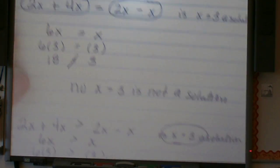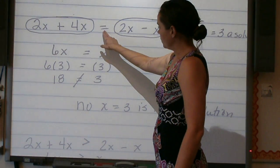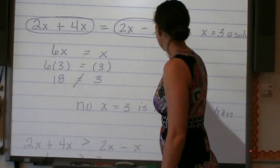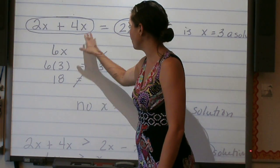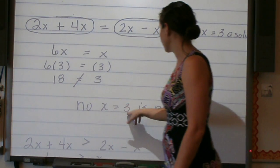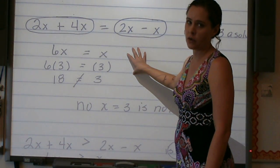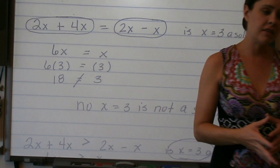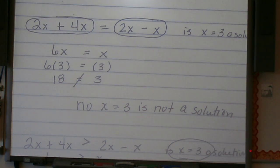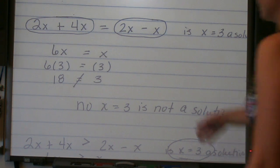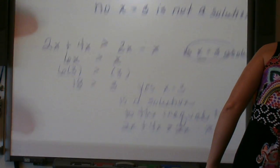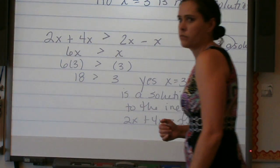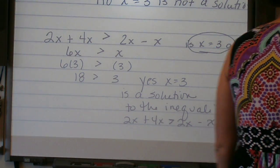Now going back to the equation, we have an equal sign. Once we simplify by plugging our variable in, we get 18 is not equal to 3. So if this is the equation we're looking at, then no, x equals 3 is not a solution for this equation. So you will find that depending on whether or not you have an equation or an inequality, the same values for x may work or not work. Because one is a sentence that says something is equal. The other is a sentence that says that something is greater than. I hope this review has been helpful.